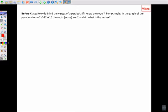The before class asked this question. How do I find the vertex of a parabola if I know the roots? For example, in the graph of the parabola, y equals 2x squared minus 12x plus 16. If you've seen the roots or zeros are 2 and 4, what is the vertex? Thing number one. This equation here looks probably very confusing for you. Don't worry about that necessarily. This is just an equation in a different form than you have seen before. So, disregard that completely.